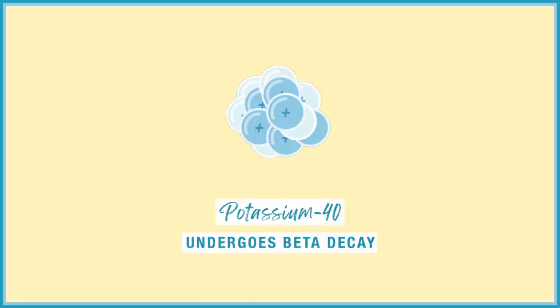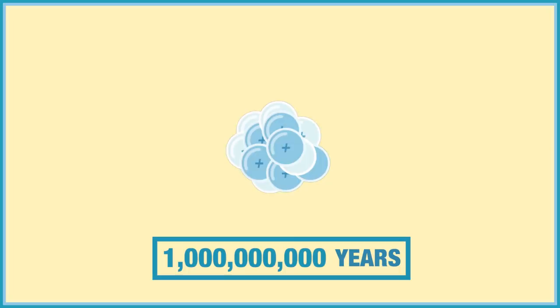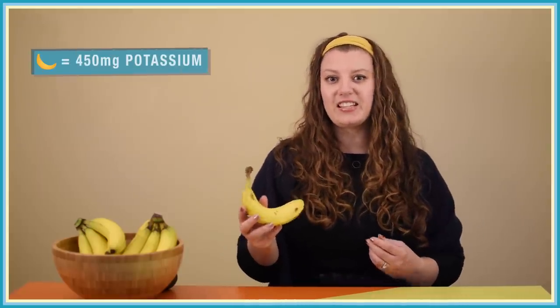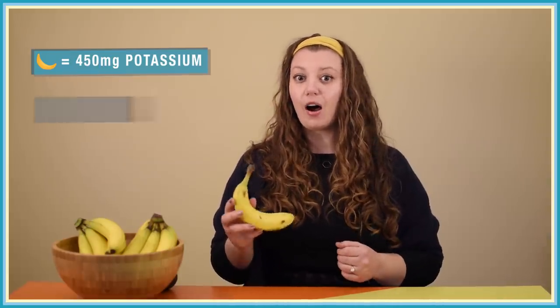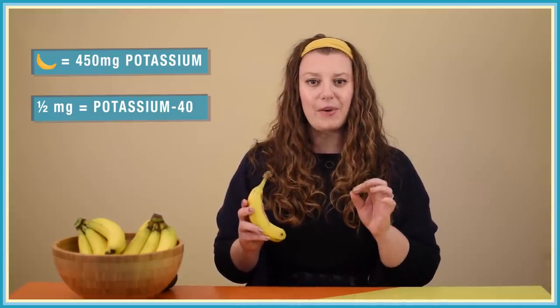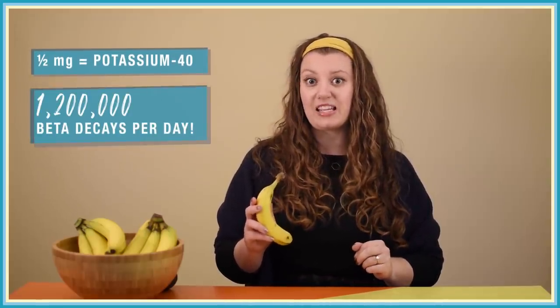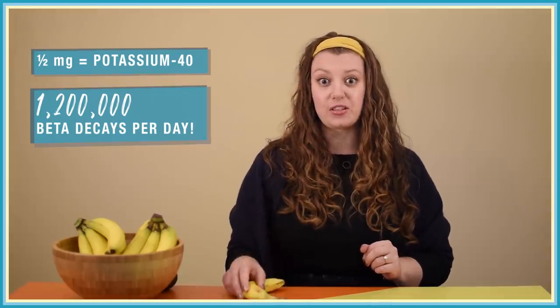Although it doesn't decay very quickly. If you took a lump of potassium-40 and waited a billion years, a bit less than half of it would have decayed. About 0.01% of potassium occurring naturally in the universe is potassium-40, and that includes the potassium in bananas. An average size banana contains about 450 milligrams of potassium, and of that amount, about half a milligram is the radioactive version, potassium-40. That translates to about 1.2 million beta decays per day, and each one of those beta decays produces a neutrino.